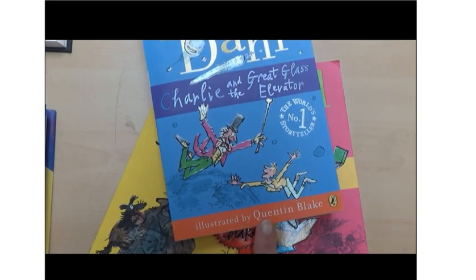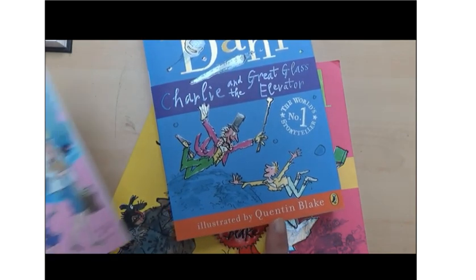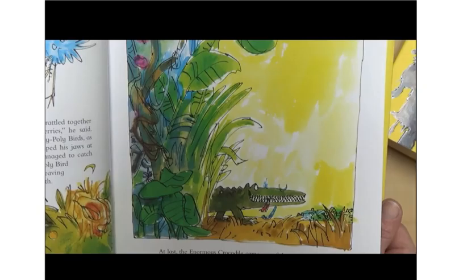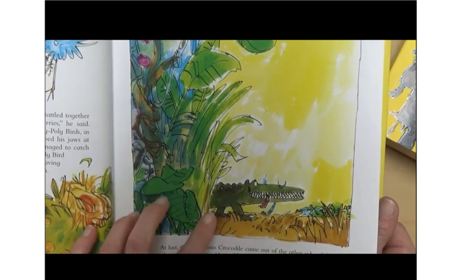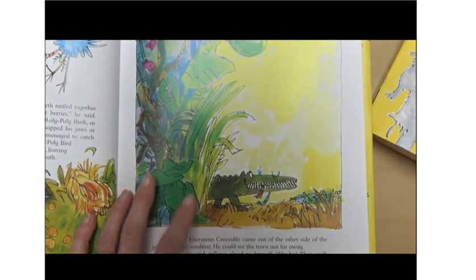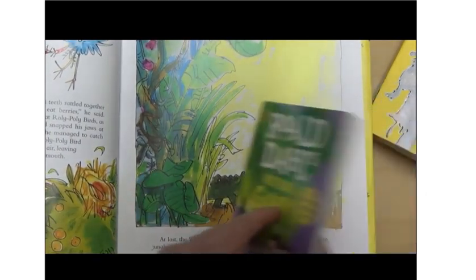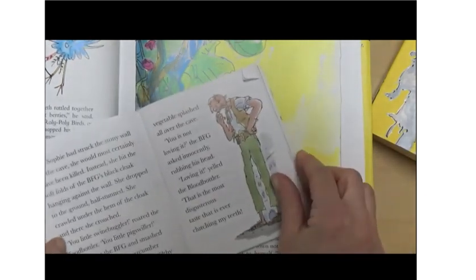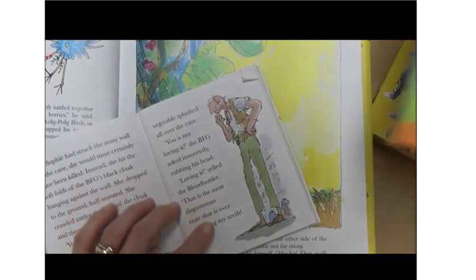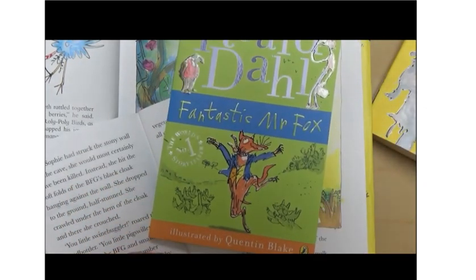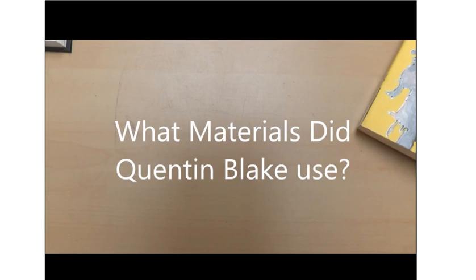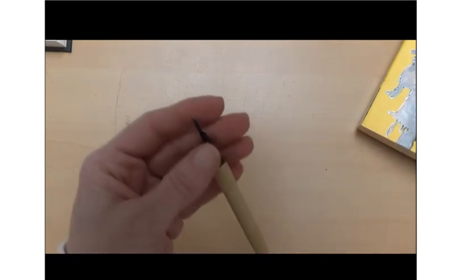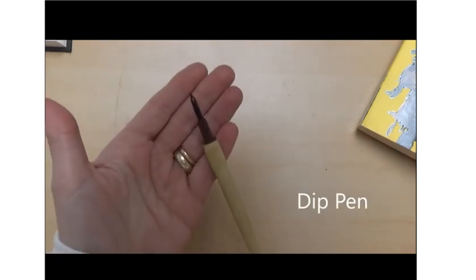I really love Quentin Blake's drawings and thought it would be really fun to have a go at drawing some of these popular book characters myself and give you a few tips on the things I learnt along the way. So the characters I'll be drawing today are firstly the Enormous Crocodile, then the BFG, and finally Fantastic Mr. Fox. Before we begin though, let's look at the materials our illustrator uses for his drawings since the materials we use can influence how our finished drawing looks.